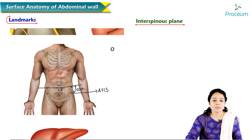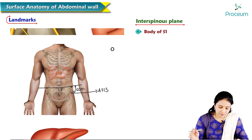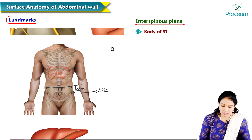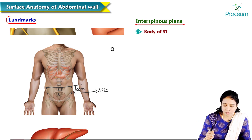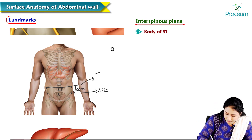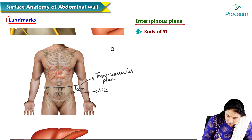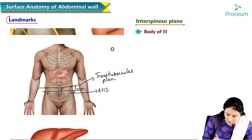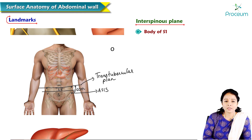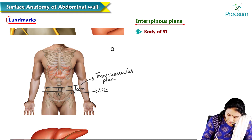The interspinous plane is located along the body of S1 vertebra, just below the transtubercular plane. Drawing a horizontal line along the body of S1 vertebra gives us the interspinous plane.